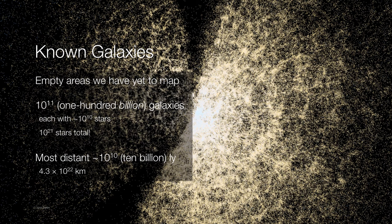And astronomers estimate that there could be as many as 100 billion galaxies. And if you think about that for a second, each galaxy has on the order of about 100 billion, or 10 to the 10th, stars.